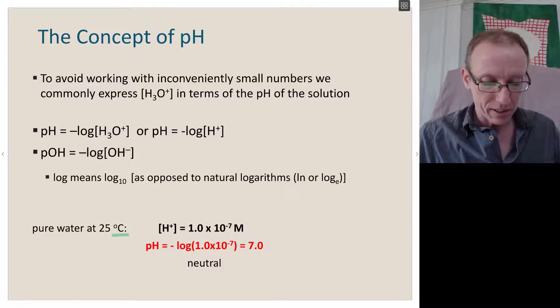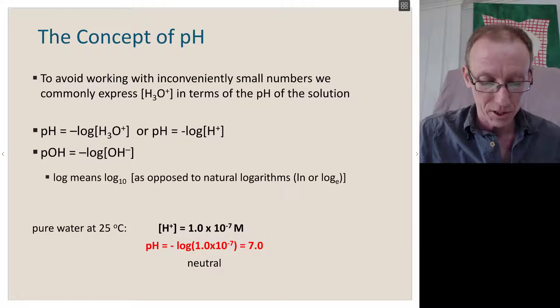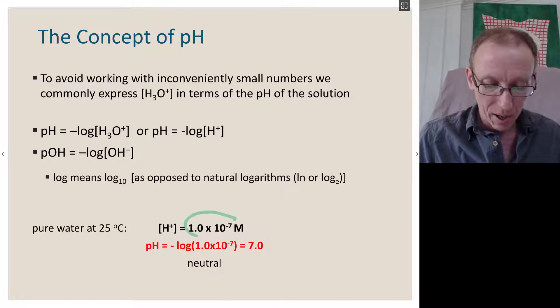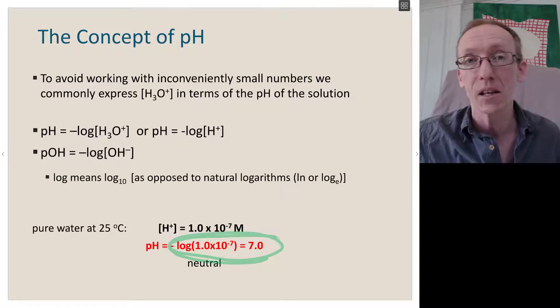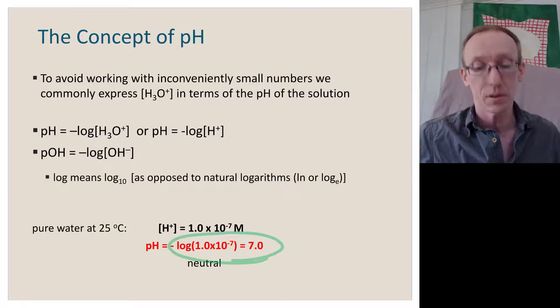Pure water at 25 degrees has a proton concentration or hydronium ion concentration of 1 by 10 to the minus 7. Therefore, the pH of a neutral aqueous solution at 25 degrees is 7.0, and we think of that as being a neutral aqueous solution.